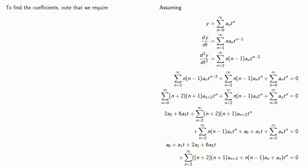So to find the coefficients, note that because this has to be equal to 0 for all values of t, we require that our constant terms, a0 plus 2a2, equal 0. Our linear coefficient, a1 plus 6a3, must also be equal to 0.